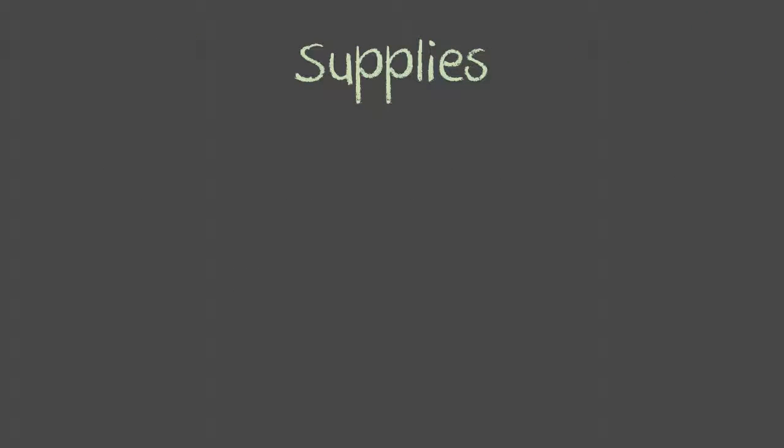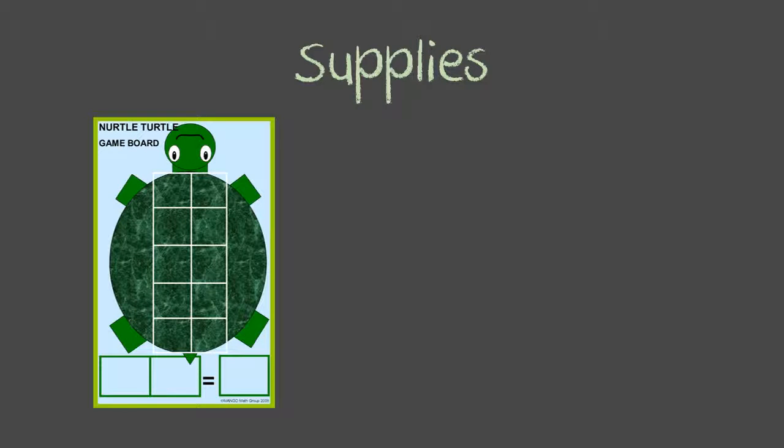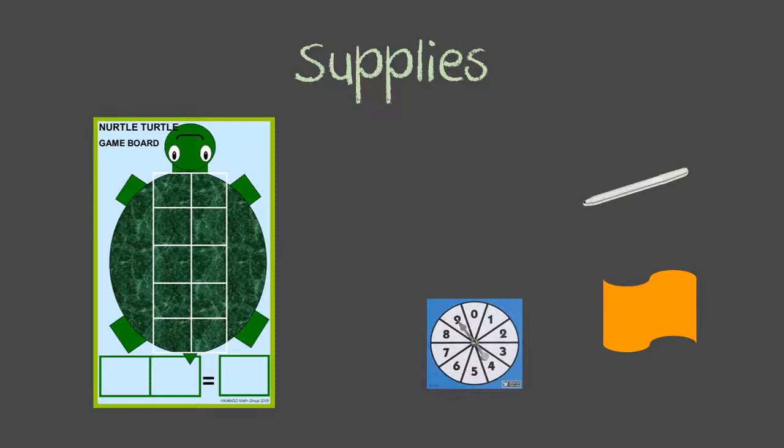Supplies included in the plastic envelope along with the instructions are a Nerdle the Turtle laminated board, a dry erase marker so they can write on the board, an eraser cloth, a numbered spinner, and some bicolored counters.